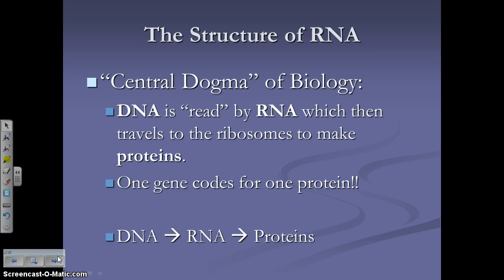The central dogma of biology is this really big idea related to the life sciences. That big idea is that one gene codes for one protein, and a gene is just a segment of DNA. In other words, DNA is read by RNA — its message is copied by RNA, which then travels to the ribosomes to make proteins. So this central dogma is: DNA → RNA → proteins.